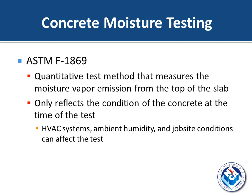Another test that covers moisture is ASTM F1869, commonly referred to as the calcium chloride test, which has been around for quite a while. This is a quantitative test method — you get a number that measures the moisture vapor emission rate from the top of the slab. The moisture vapor emission rate is expressed in pounds per thousand square feet per 24 hours, often referred to colloquially as 'pounds.' This test only reflects the condition of the concrete at the time of the test itself — HVAC systems, ambient humidity, and job site conditions can all affect it.